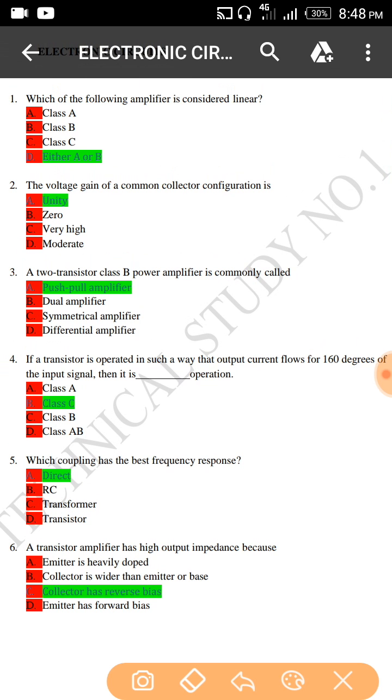The right answer is Class A and B. Next question: the voltage gain of a common collector configuration is... common collector configuration voltage gain is unity.